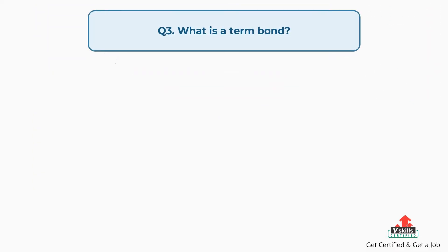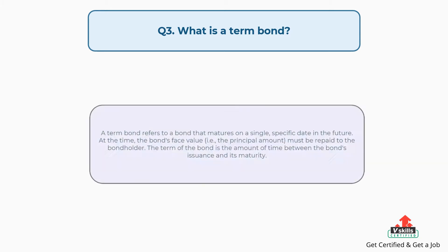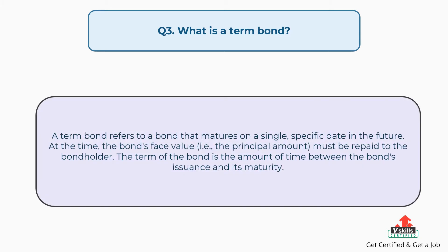Question number three: what is a term bond? The answer is, a term bond refers to a bond that matures on a single, specific date in the future. At that time, the bond's face value, that is, the principal amount, must be repaid to the bondholder. The term of the bond is the amount of time between the bond's issuance and its maturity.